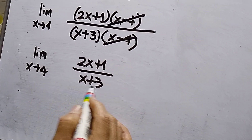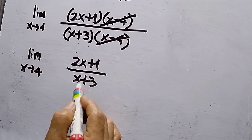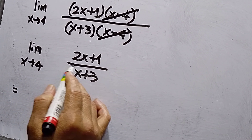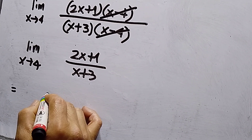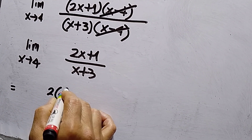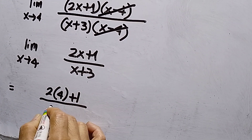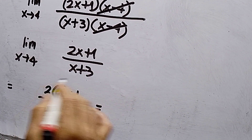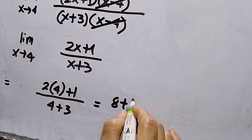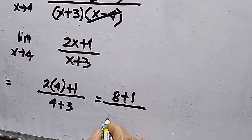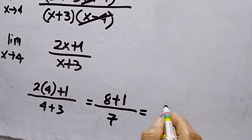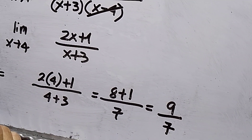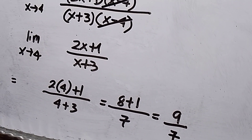Substituting x equals 4 will not make the denominator 0, so substitute: 2 times 4 plus 1 over 4 plus 3 equals 8 plus 1 over 7, which is 9 over 7. The answer for number four is 9 over 7.